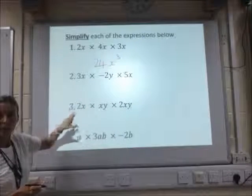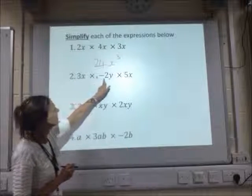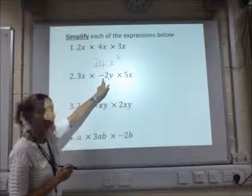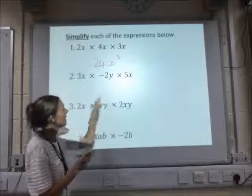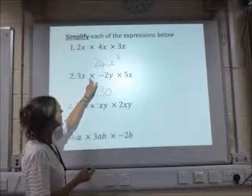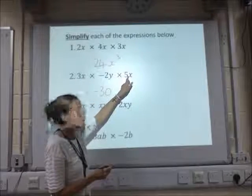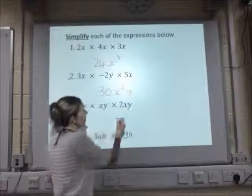Number 2, again deal with the numbers first and then the letters. So 3 times minus 2, minus times the plus is the minus, we've got minus 6 times 5 is minus 30. x times x is x squared, times the y is x squared y.